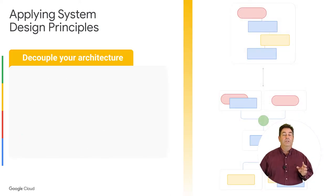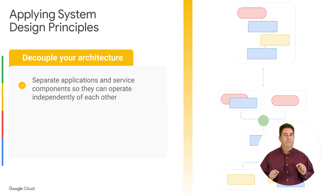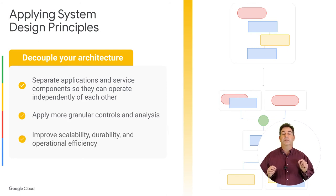Thirdly, decouple your architecture. Decoupling is a technique used to separate your applications and service components so they can operate independently of each other. In effect, a decoupled architecture helps improve scalability, enables more granular controls and analysis, and optimizes the overall efficiency of operations.